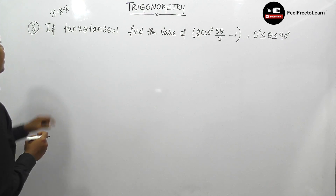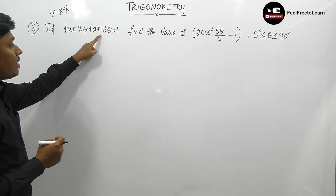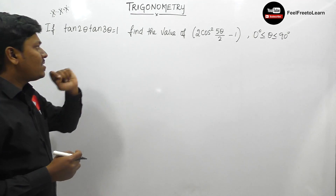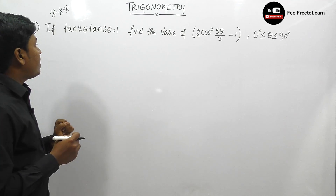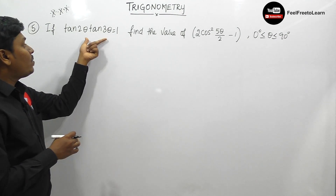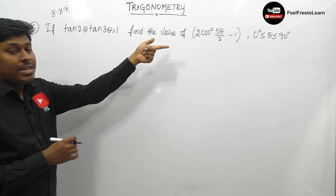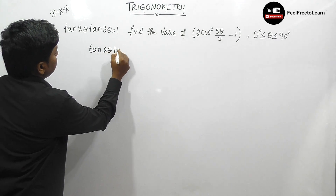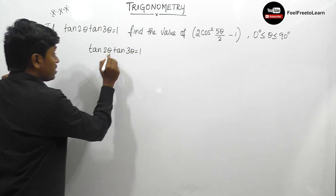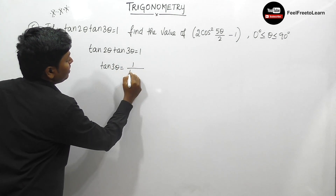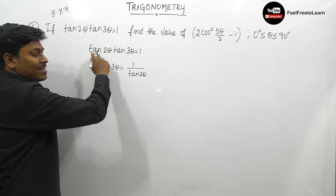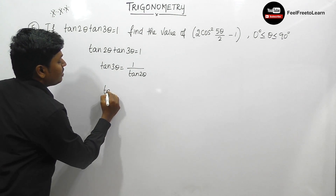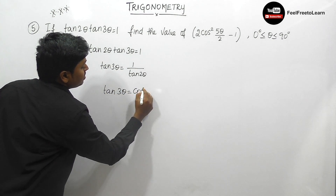Question number 5: if tan 2θ · tan 3θ equals 1, find the value of 2·cos²(5θ/2) minus 1, where 0° ≤ θ ≤ 90°. We need to first find the value of θ. Rearranging: tan 3θ equals 1/tan 2θ, and 1/tan equals cot, so tan 3θ equals cot 2θ.